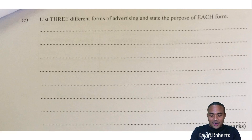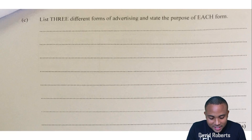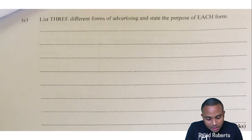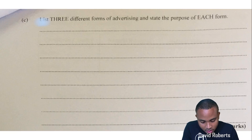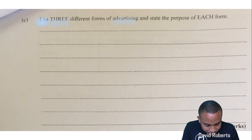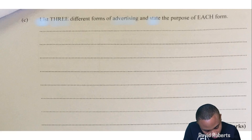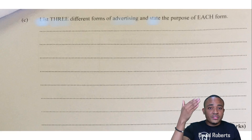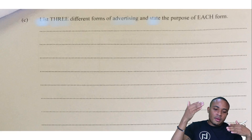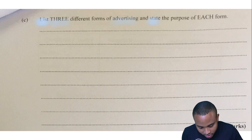Part C: list three different forms of advertising and state the purpose of each form. This is for six marks. The approach is: give the form, then state its purpose.